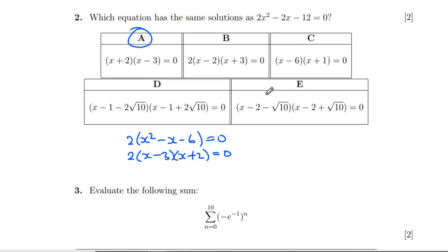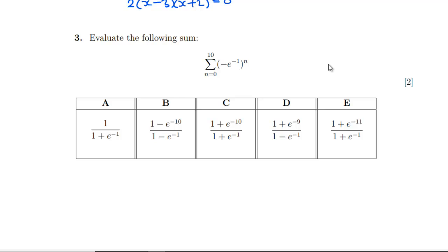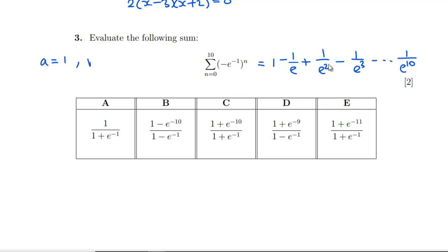Question 3: evaluate the following sum. Writing out the terms: when n = 0 we get 1, for n = 1 we get −1/e, for n = 2 we get +1/e², and so on up to n = 10, giving −1/e³ etc. So a = 1, r = −1/e, and there are 11 terms in total.